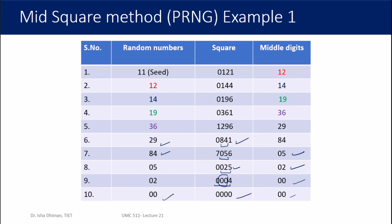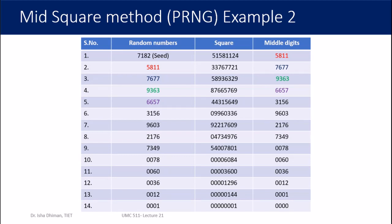Once the algorithm produces 00, squaring it gives 00 again — so from that point onwards every iteration gives nothing except 00. The sequence terminates very early, which is a major limitation. Another limitation is that after certain steps, numbers may start repeating themselves — we do not want the pattern to repeat, or if it does, it should repeat only after a very long period. Because of these limitations, the mid-square method did not work very well.